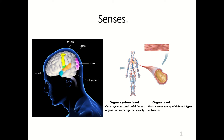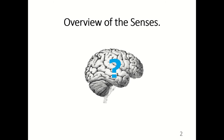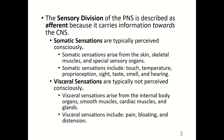This lecture is on the senses. The sensory division of the peripheral nervous system is described as afferent because it carries information towards the central nervous system. Somatic sensations are typically perceived consciously and arise from the skin, skeletal muscles, and the special sensory organs.